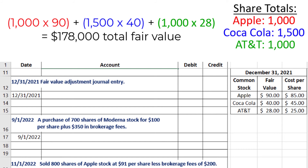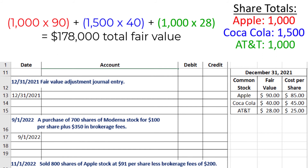Next, we need to find the total cost related to our investments using the same process, but multiplying the number of shares by the cost per share instead. That's 1,000 times $85 for Apple, plus 1,500 times $45 for Coca-Cola, plus 1,000 times $25 for AT&T, which gives us a total cost of $177,500.